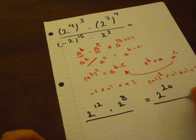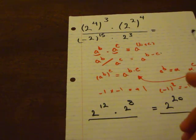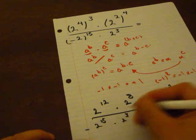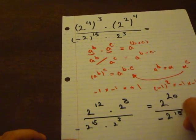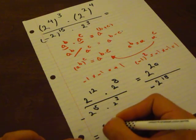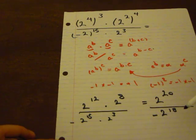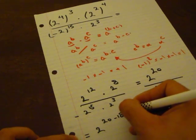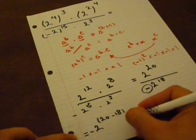Now let's go to the denominator. Negative 2 to the power of 15 — since the power is odd, the negative stays, giving us negative times 2 to the power of 15, times 2 to the power of 3. Using the first formula again, this becomes negative 2 to the power of 18. Now I'm going to simplify using the division hint: 2 to the power of 20 divided by 2 to the power of 18 gives 2 to the power of 20 minus 18. And I have a negative here, so I keep it.